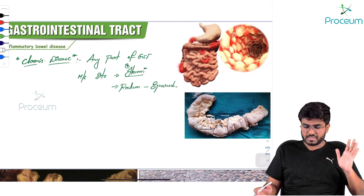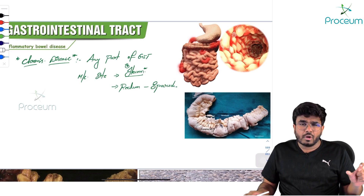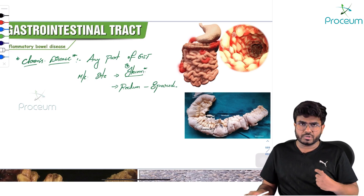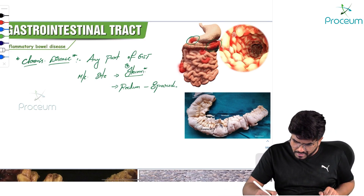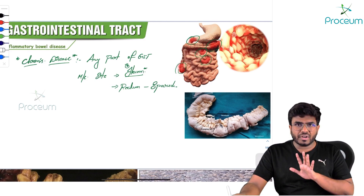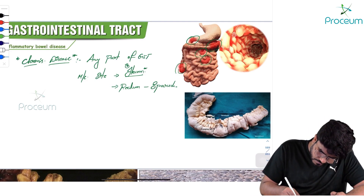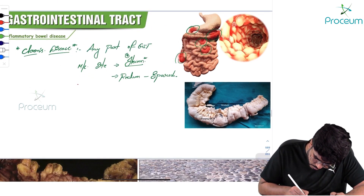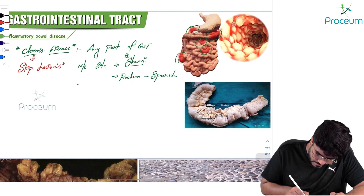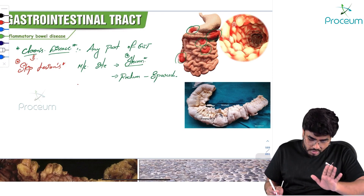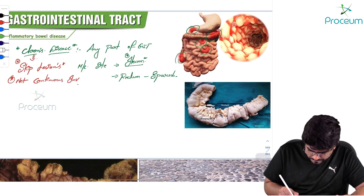One more important thing: any part of the GIT can be affected, but is it a continuous involvement? Looking at the diagram, you can see that this part is affected, that part is not, this part is affected — it is not a continuous involvement. This is called skip lesions. One part is affected, the other part is not — not continuous involvement. These skip lesions come with longitudinal serpigenous ulcers, which look like a snake.